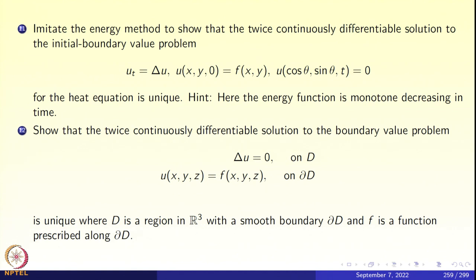Imitate this energy method to show that a twice continuously differentiable solution to the initial value problem for the heat equation is unique — do the same idea but with the heat equation. This time E(t) is not constant but monotone decreasing in time. Also show that the twice continuously differentiable solution to the boundary value problem — Laplacian of u = 0 on D, u(x,y,z) = f(x,y,z) on ∂D — is unique in D, where D is a region in ℝ³ with smooth boundary ∂D and f is prescribed along ∂D. Multiply the differential equation by u and integrate.